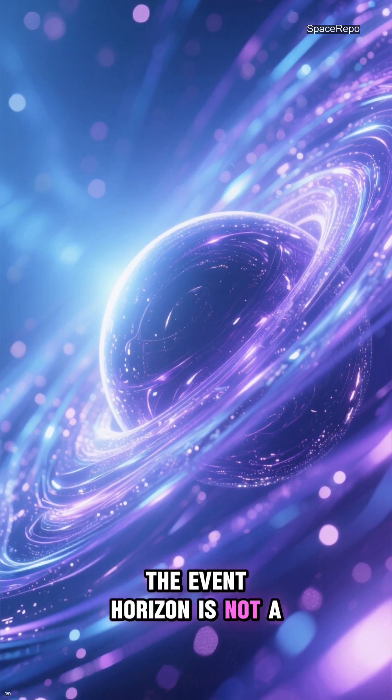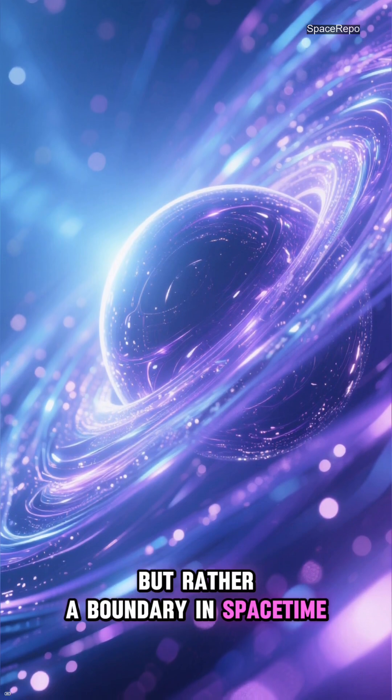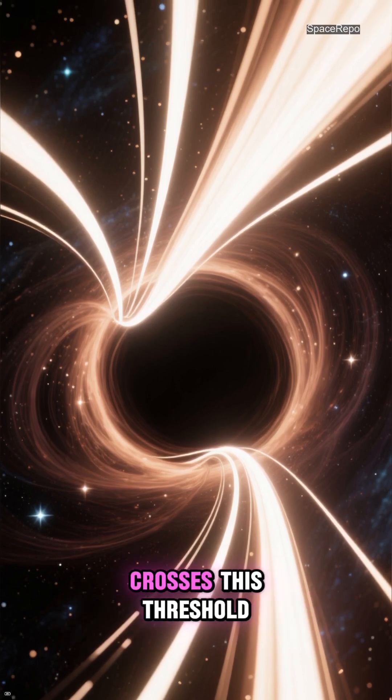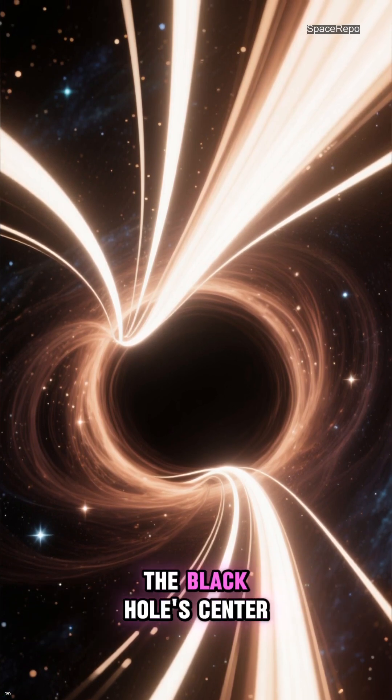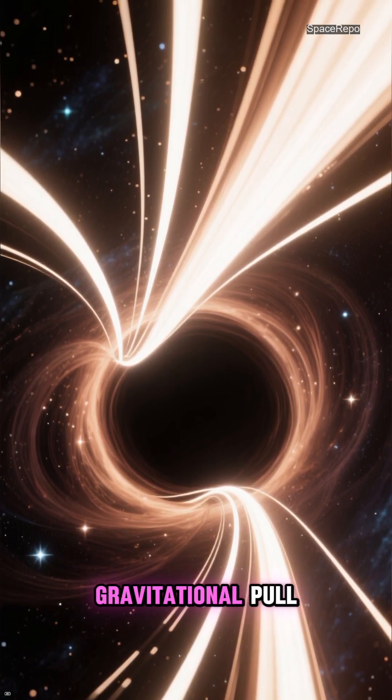The event horizon is not a physical surface, but rather a boundary in spacetime, a point of no return. Once an object, or even light, crosses this threshold, it is irrevocably drawn towards the black hole's center, unable to escape its immense gravitational pull.